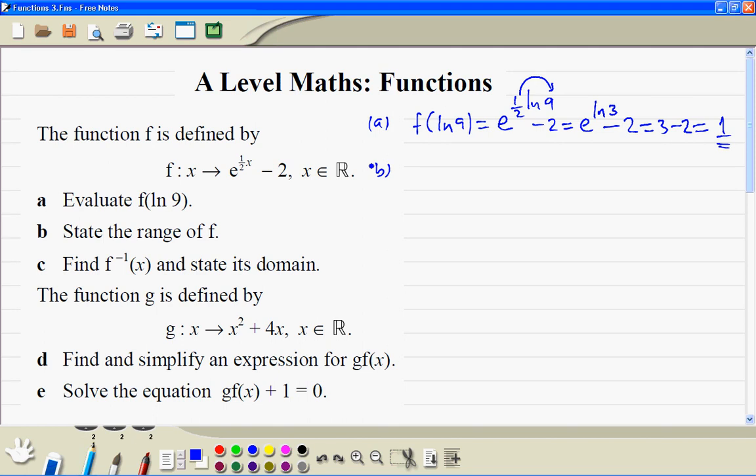Part b. So this is the sketch of the graph. It's been translated 2 units down, so when x equals 0, it's 1 minus 2 is minus 1. It's never going to touch this line - that's when y equals minus 2. So therefore, the range is y is always greater than minus 2.